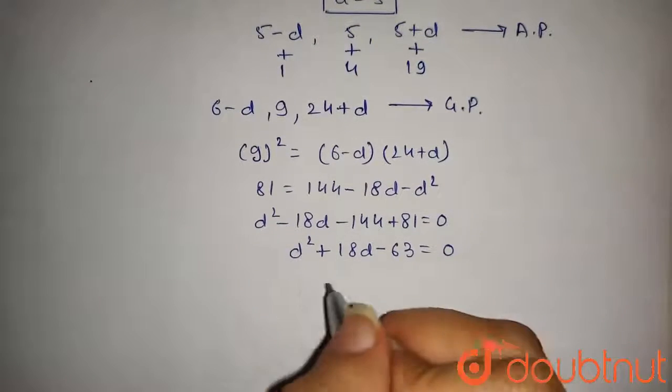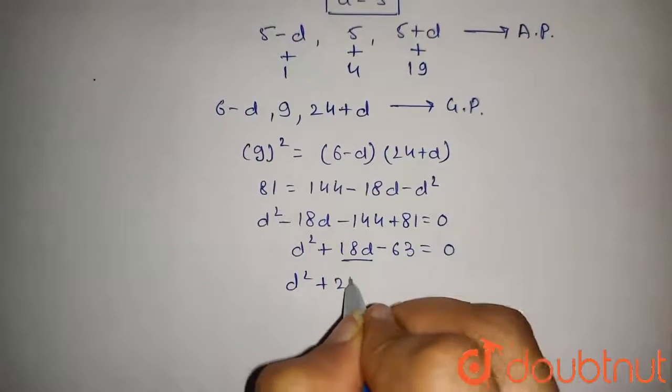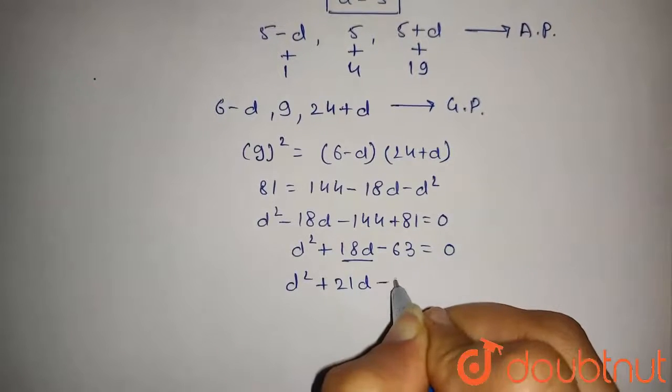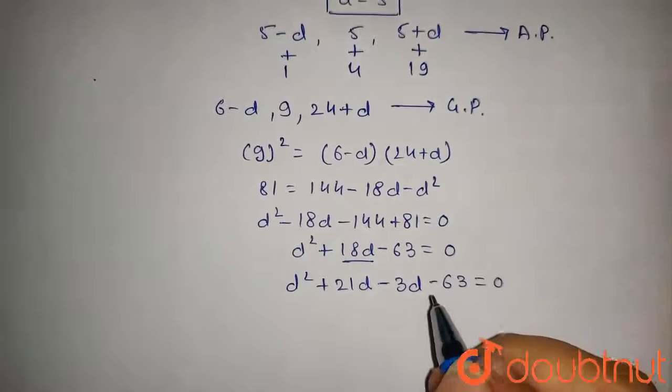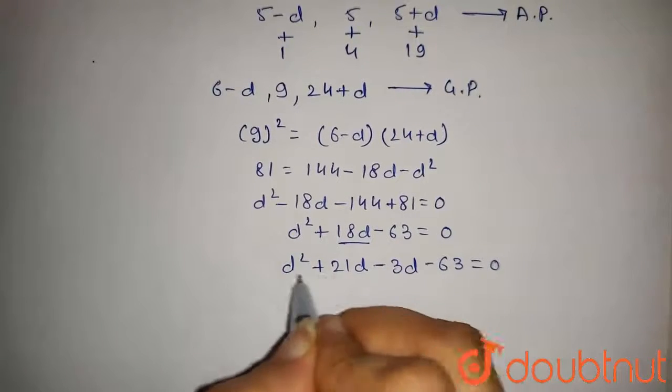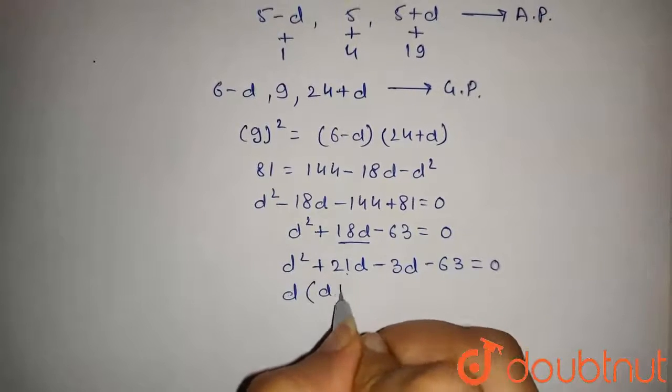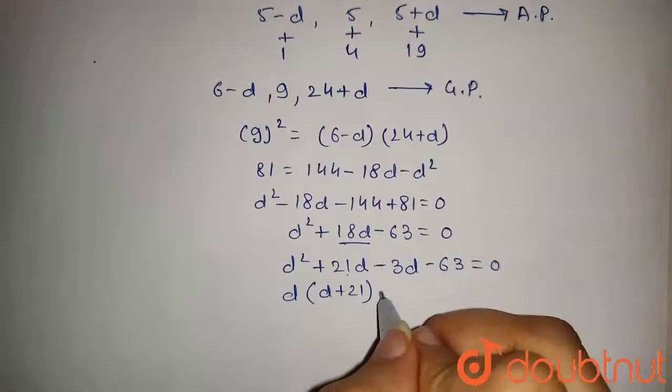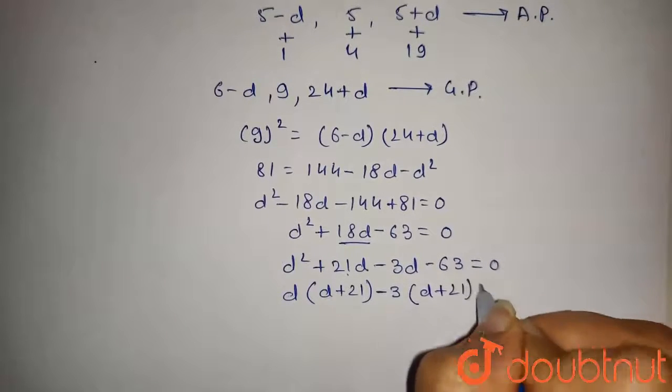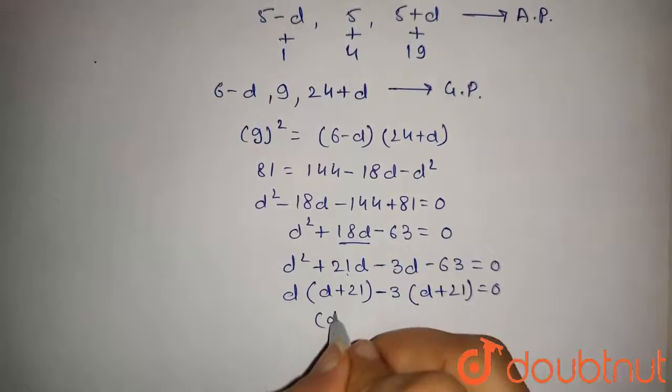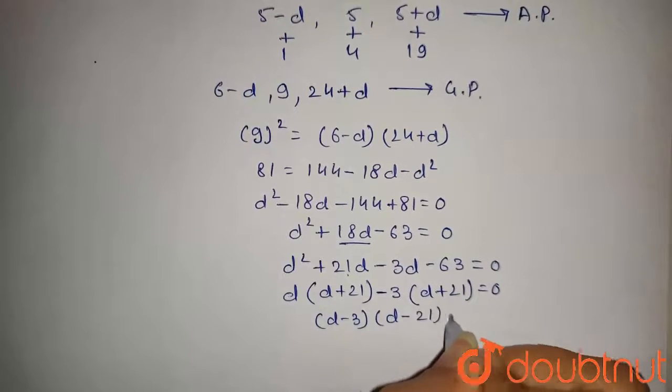This 18D can be written as 21D minus 3D minus 63 equals 0. Taking D common from these two, we get D into D plus 21. Taking minus 3 common from this, we get minus 3 into D plus 21. This will be D minus 3 into D plus 21 equals 0.